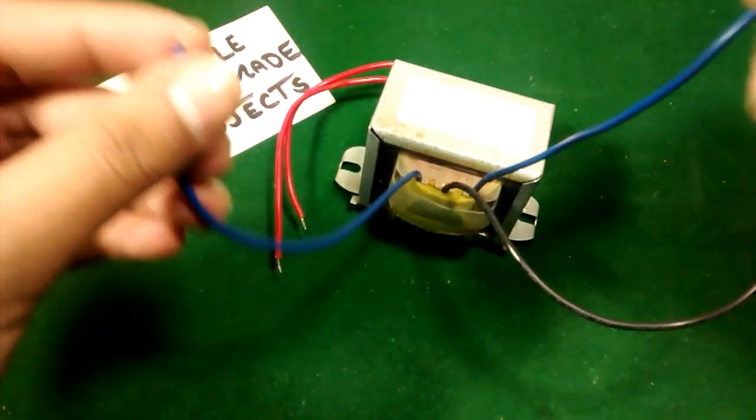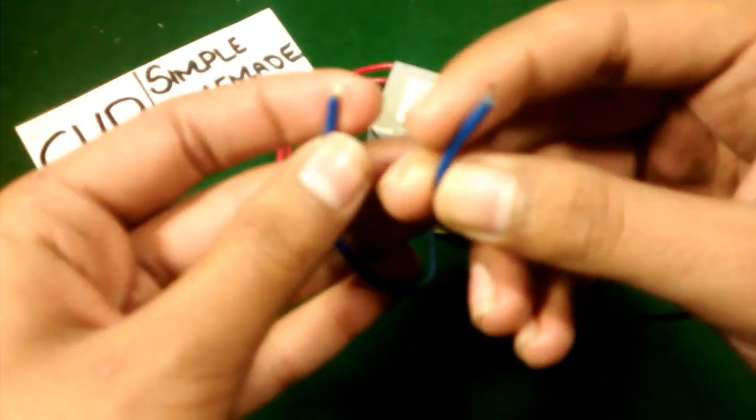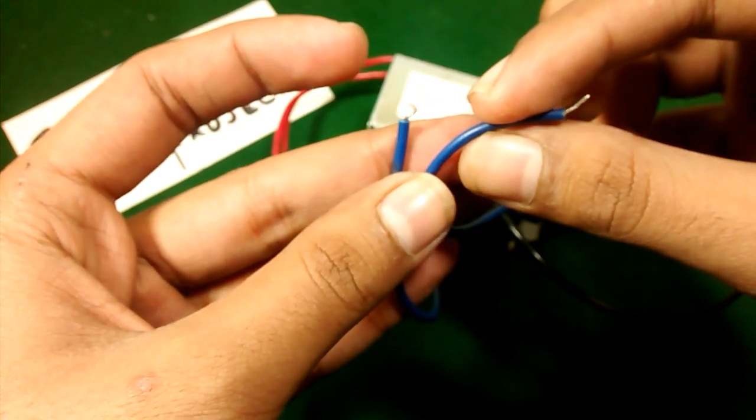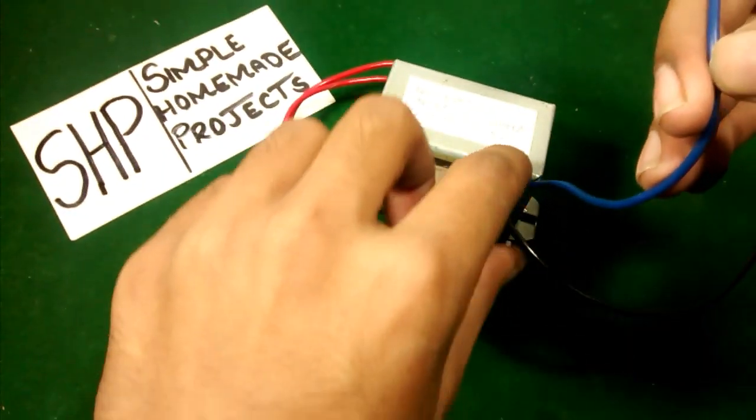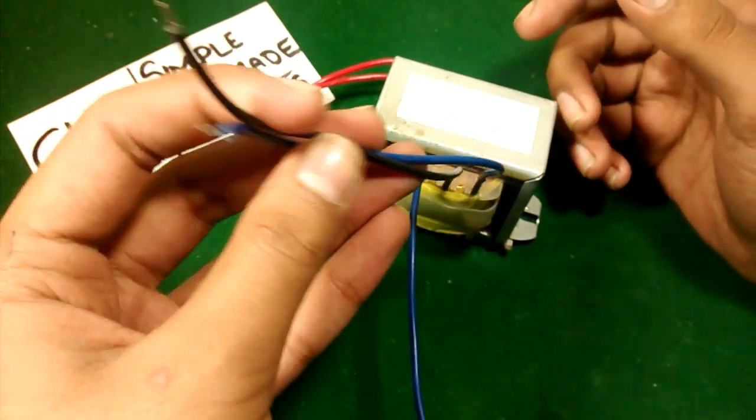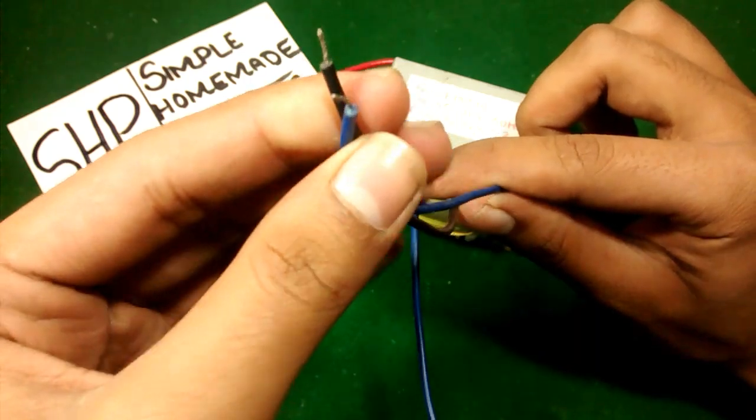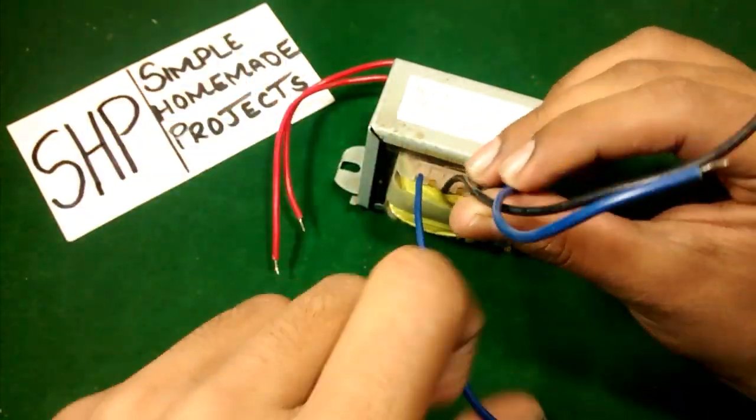The other two wires are the other ends of the coils. So if you want to obtain 12 volt at output, you have to use the central wire and any of the side wires, like this. Or you can also use this one like this, keeping the black as common.